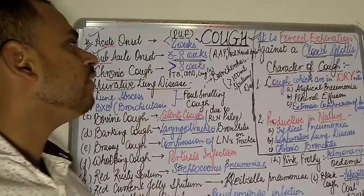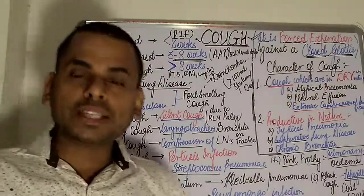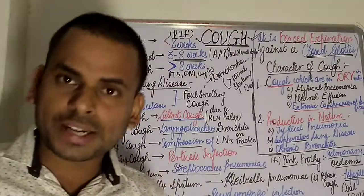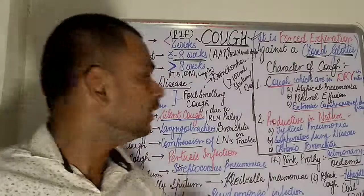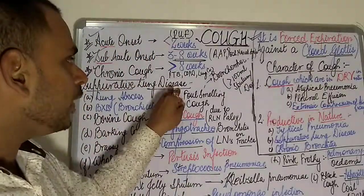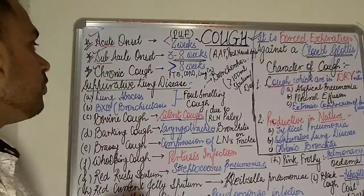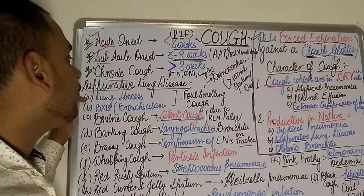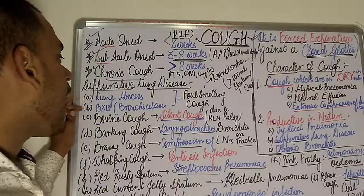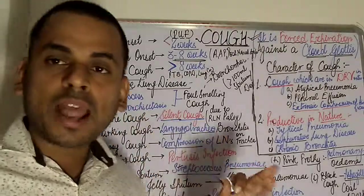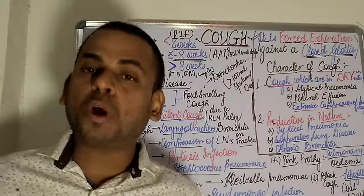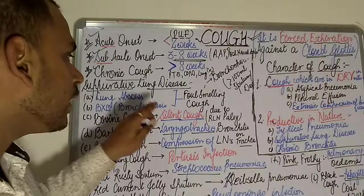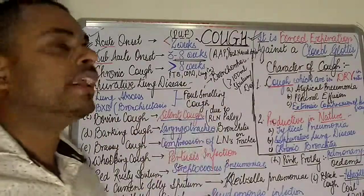Moving on to suppurative lung disease — wherever the term suppurative is used, it refers to the production of pus. Two diseases fall under suppurative lung diseases: lung abscess and bronchiectasis. In bronchiectasis, there is an abnormal dilatation of the bronchi. In both lung abscess and bronchiectasis, foul-smelling cough is present.